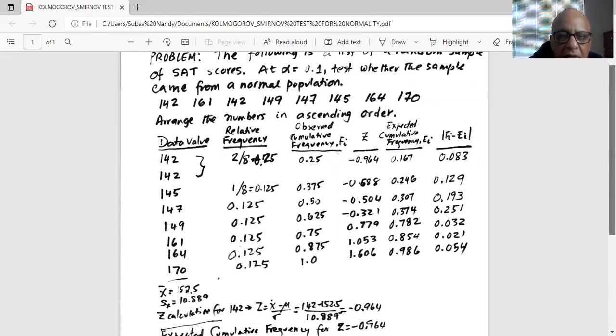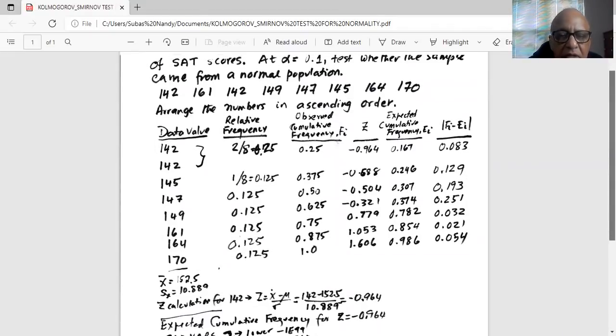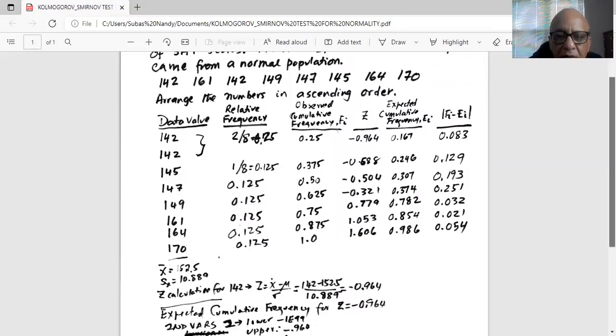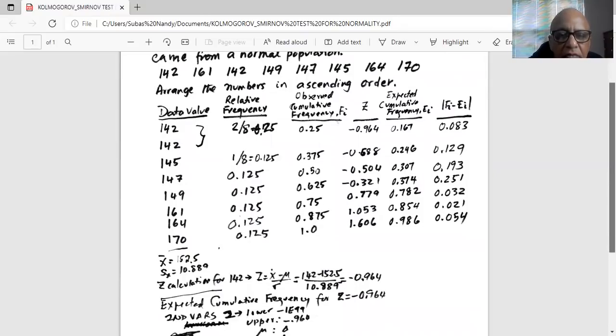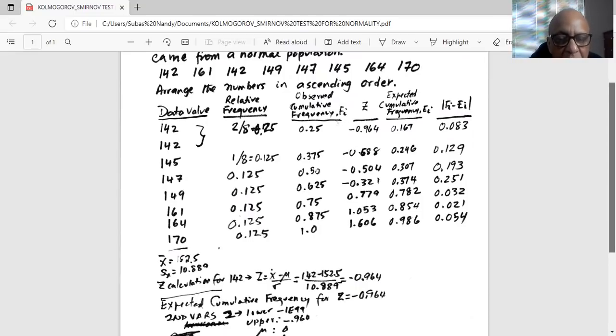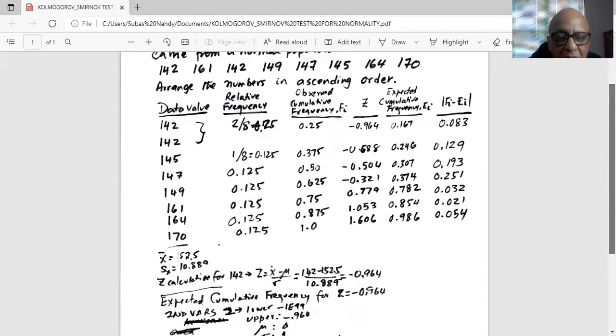Now we need to calculate the standardized z value. Remember, z is given by x minus mu divided by sigma, the standard normal score. And for x equal to 142, the standard normal variable z is 142 minus the mean 152.5 divided by the standard deviation 10.889, which is minus 0.964.